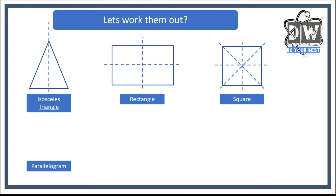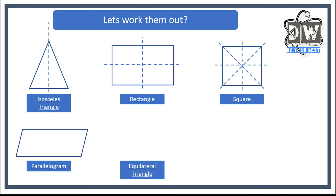Now we've got a parallelogram. How many lines of symmetry do you think a parallelogram has? It has none — zero lines of symmetry. If we cut it through the middle, one side is different to the other. Whichever way we try to cut it, the two halves are always different.